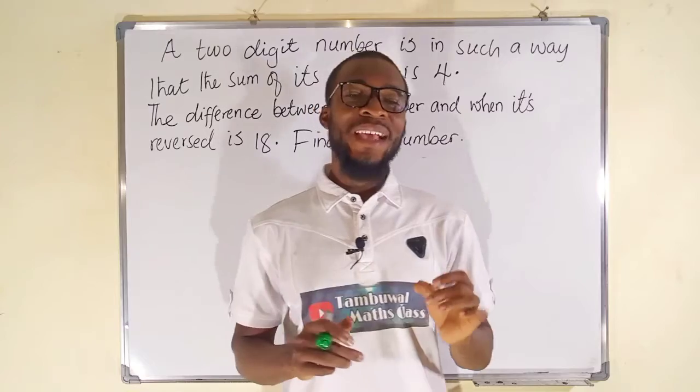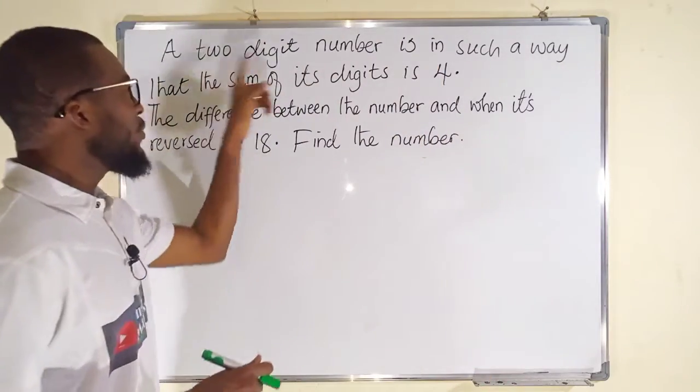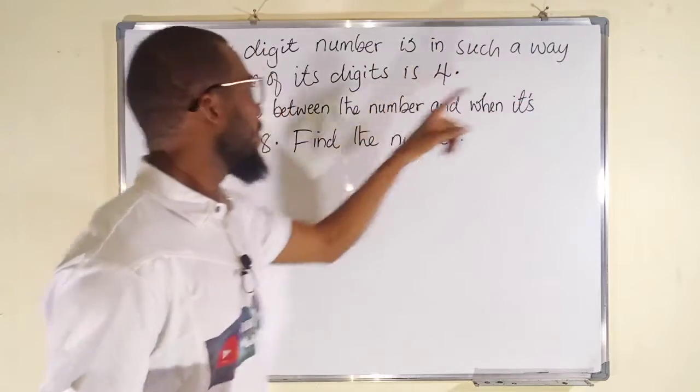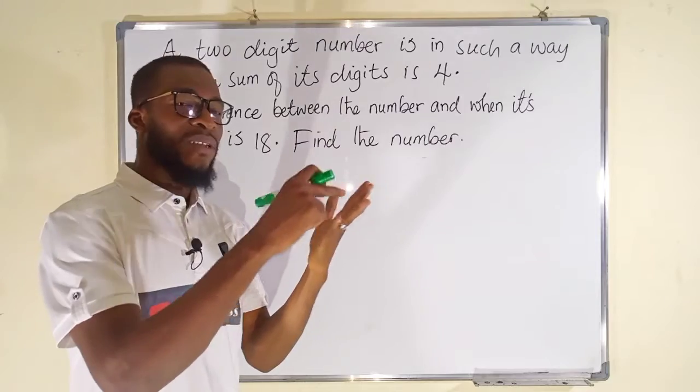But in the end I realize it is very simple. The question reads: A two-digit number is in such a way that the sum of its digits is 4. This means that if you should add the first and the second digits together, the answer will be 4.